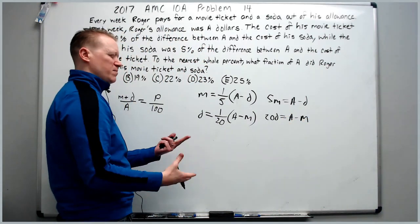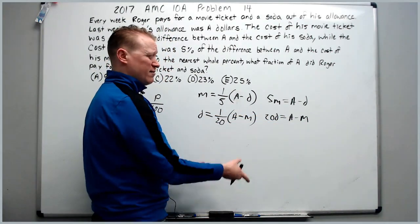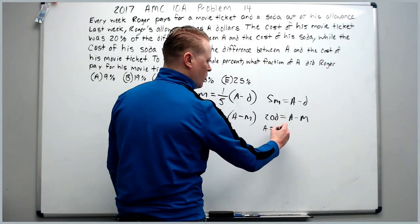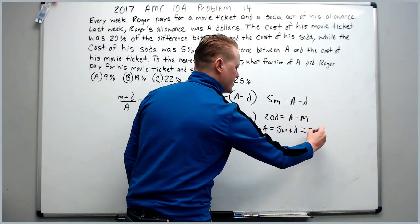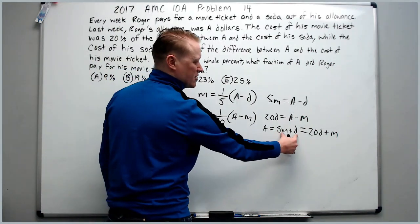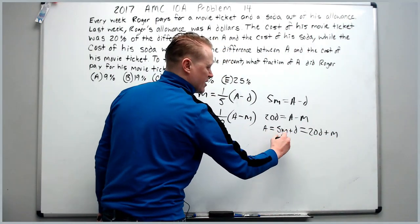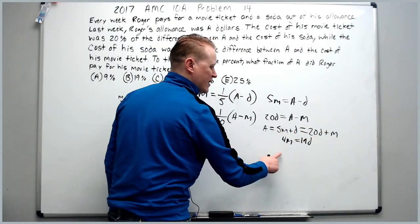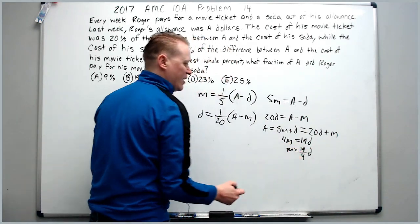We probably should play around with the numbers some. We've got an A here and an A here. Let's solve it and set it equal and see what happens. A will equal 5M + D, which will also equal 20D + M. Next, let's solve for D in terms of M or M in terms of D. We'll move the M over here to get 4M and the D over here to get 19D. Divide by 4 to get M = 19D/4.